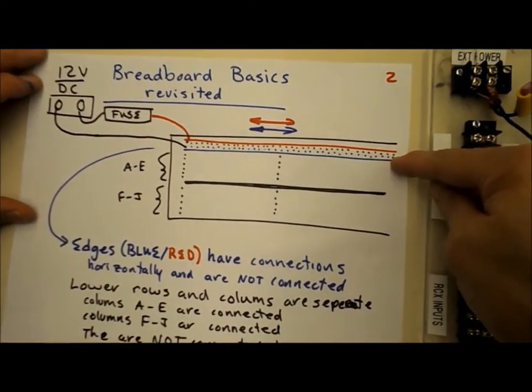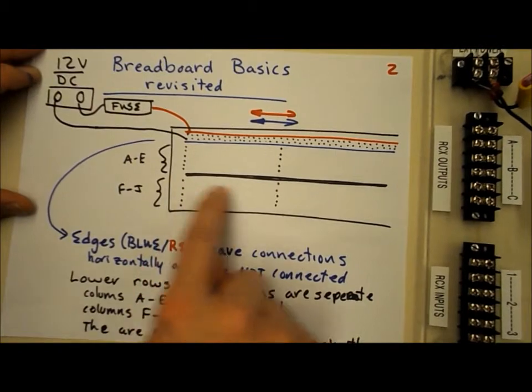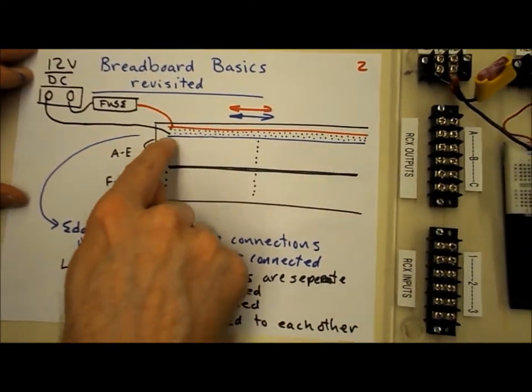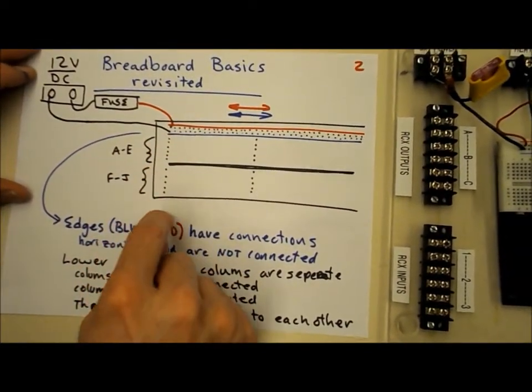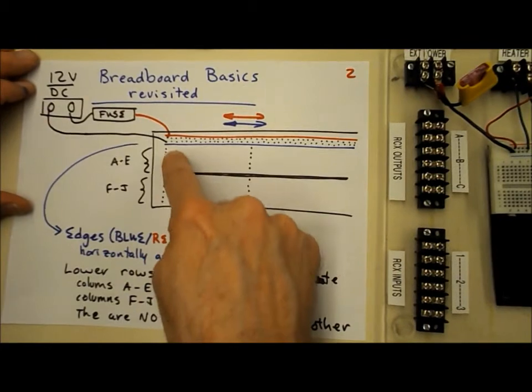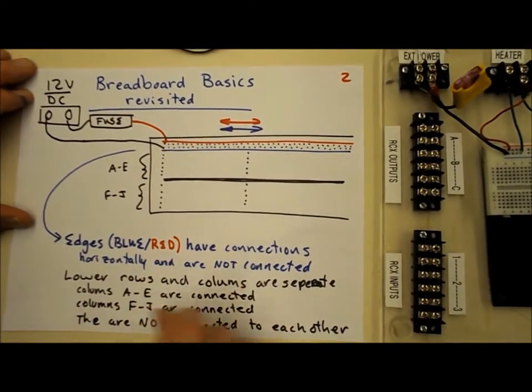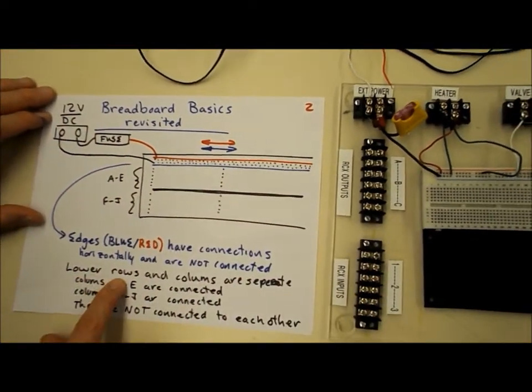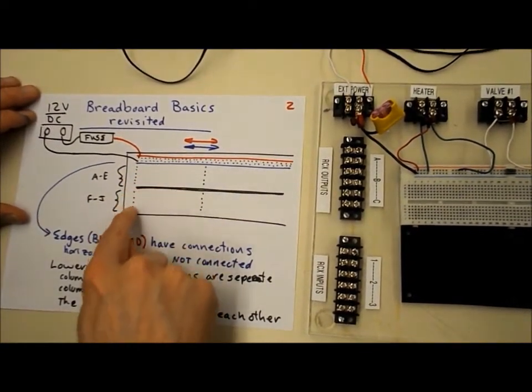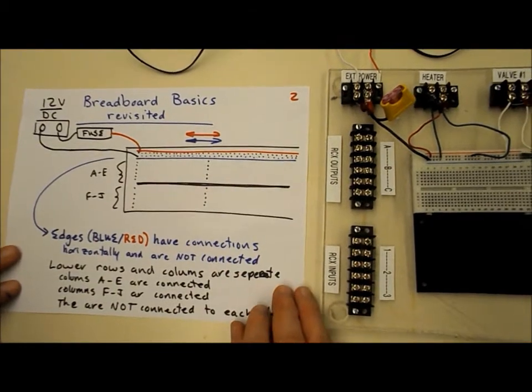Another way to look at it is plus and minus. We've got the positive side that we need to keep track of. On the lower sections where there's a whole bunch of columns and rows, the columns are what's important. The rows A through E are all tied together in columns, and the rows F through J are all tied together. These two columns, up top and bottom, are not tied together. The edges that are red and blue have connections horizontally, and the lower rows and columns are separate. A through E makes contact, F through J makes contact, but they are not connected across.